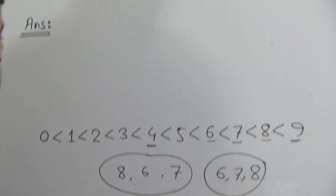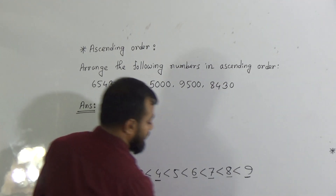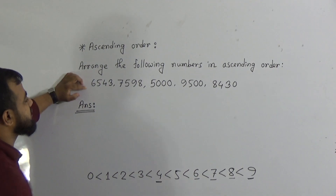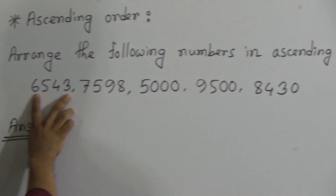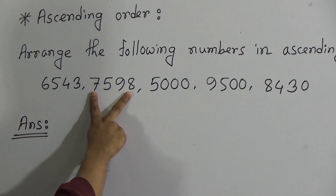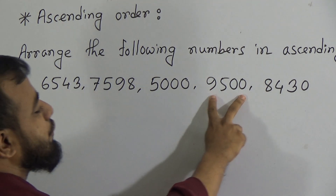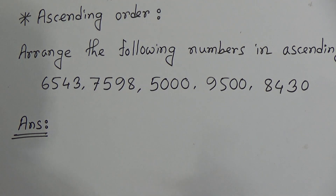Now my students, if we have got more than 1 digit — that means the numbers have multiple digits — look at the numbers. This number has 4 digits. This number is also 4 digits, and all the numbers have 4 digits. So first of all, what should we do? We should identify the place value of all the numbers.